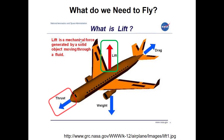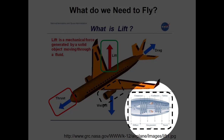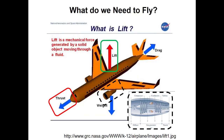In order to get lift we need thrust because the airplane has to be moving through the air very quickly — that's why the plane doesn't fly automatically on the runway; you've got to build up enough speed to generate enough lift. What gives us that thrust, at least in a jet plane, is the turbojet engine mounted under the wing. So because we have thrust the airplane moves through the air, and that allows us to generate lift with the wing.